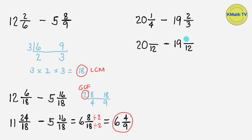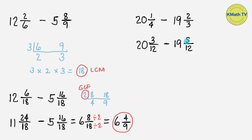Next, let's find the numerators. For the minuend: 12 divided by 4 equals 3, and 3 times 1 equals 3. For the subtrahend: 12 divided by 3 equals 4, and 4 times 2 equals 8, so the numerator of the subtrahend is 8. The fractions are now similar — they have the same denominators — so let's proceed to subtract.